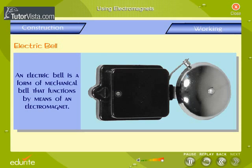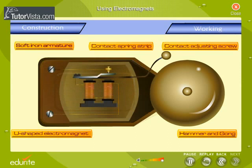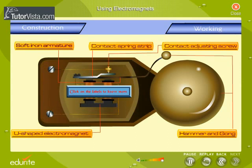An electric bell is a form of mechanical bell that functions by means of an electromagnet. Click on the labels to know more.